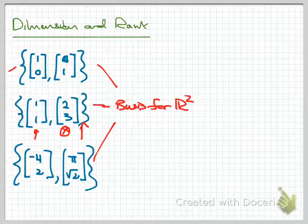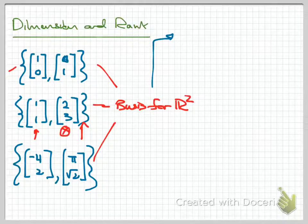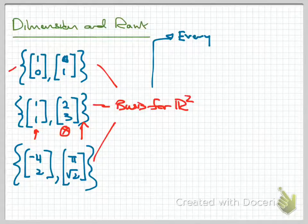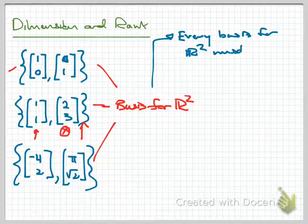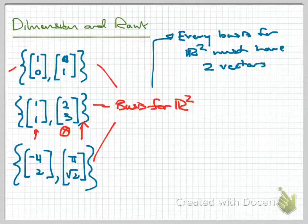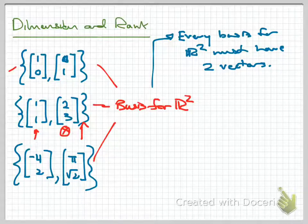So one important and intuitively obvious fact: although there are many different bases for R2, every basis for R2 must have something in common—namely, they must have exactly two vectors in them. Not every two-vector set is a basis, but if you have a basis for R2, it must have exactly two elements.